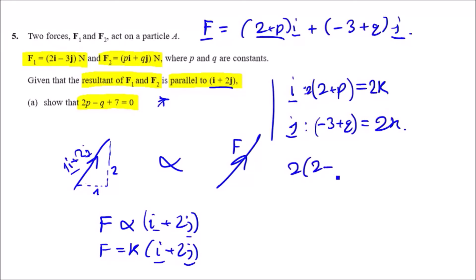Expanding the bracket: 4 plus 2p. Eventually, just solving this or tidying up, you're going to get that result and we're done. You're going to get exactly what you're looking for.